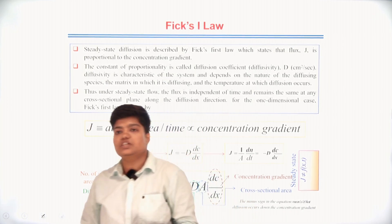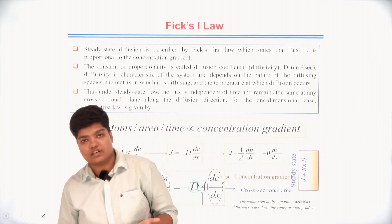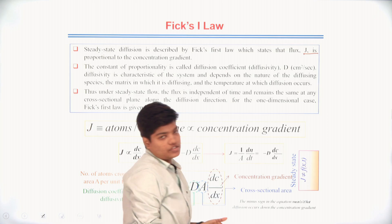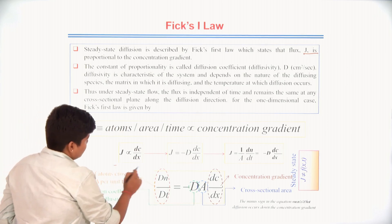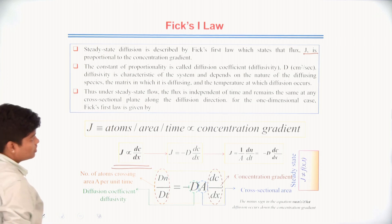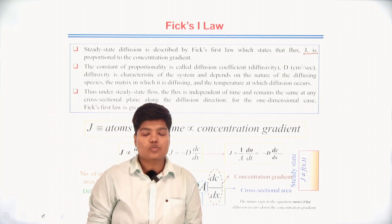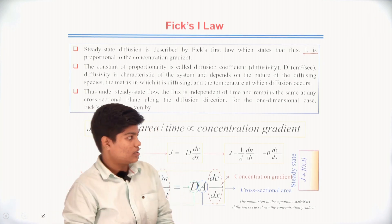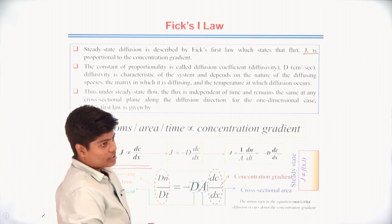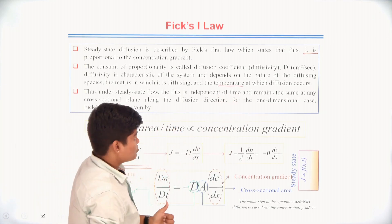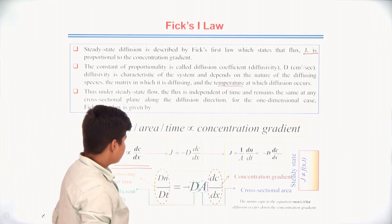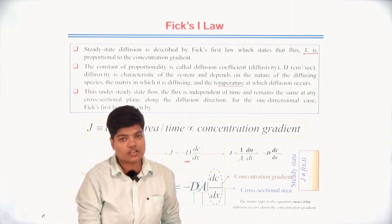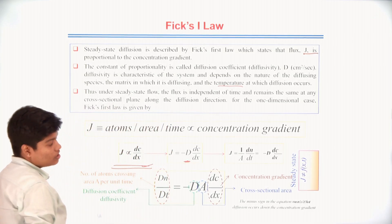The most important application of the diffusion mechanism is Fick's law. We will discuss two laws: Fick's first law and Fick's second law. Fick's first law states that the flux J is directly proportional to the concentration gradient dC/dX. The proportionality constant D is known as the coefficient of diffusion or diffusivity. The coefficient of diffusion mainly depends on the structure and properties of the matrix and the temperature at which diffusion occurs. The formula is J = -D(dC/dX), where the negative sign indicates flux occurs down the concentration gradient.